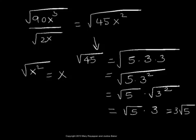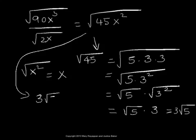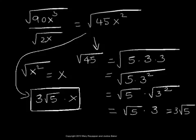So now, this whole thing becomes 3 root 5 times x. That is the simplified form of the given division of radicals. I hope this helps. Thank you.